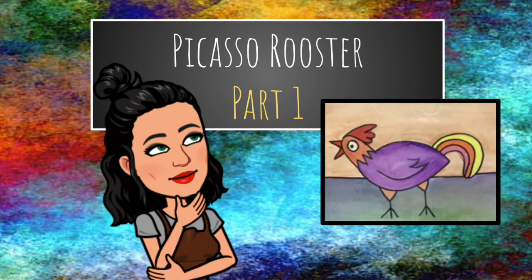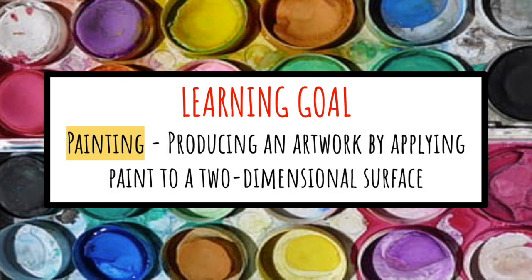Which leads us into our next project, a Picasso rooster, and this is part one. Our learning goal for this project is a painting, and a painting is producing an artwork by applying paint to a two-dimensional surface, such as a piece of paper.